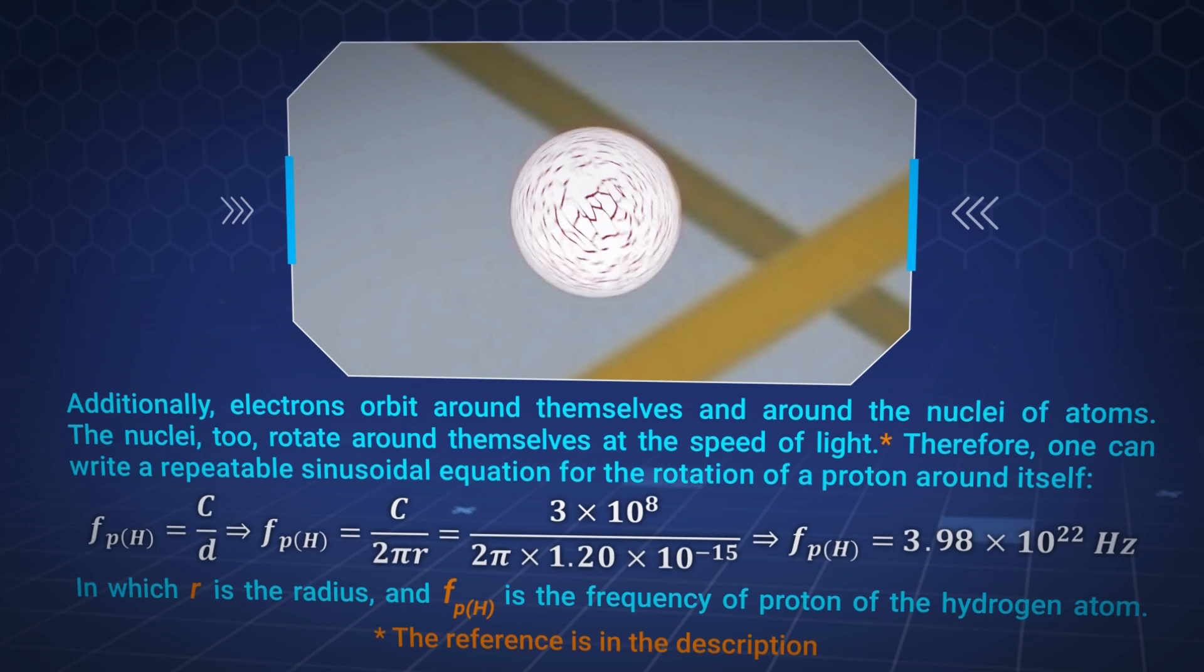Therefore, one can write a repeatable sinusoidal equation for the rotation of a proton around itself, in which r is the radius and f of p of h is the frequency of proton of the hydrogen atom.